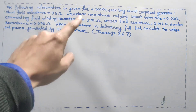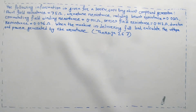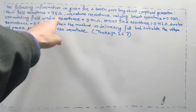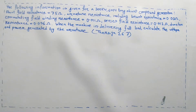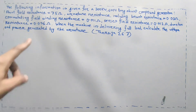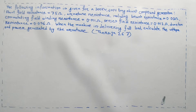The following information is given for a 300 kilowatt, 600 volt, long shunt compound generator. Shunt field resistance equals 75 ohm. Armature resistance including brush resistance equals 0.03 ohm. Commutating field winding resistance equals 0.011 ohm. Series field resistance equals 0.012 ohm. Diverter resistance equals 0.036 ohm. When the machine is delivering full load, calculate the voltage and power generated by the armature.